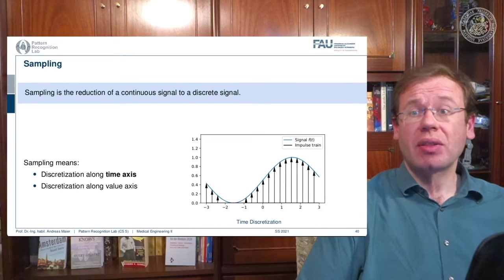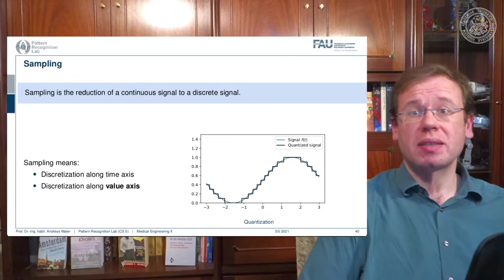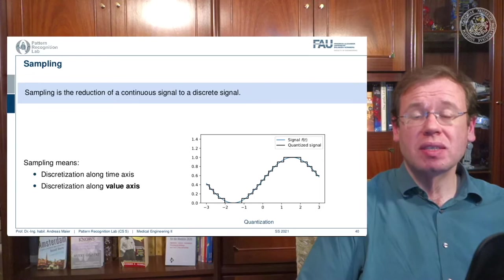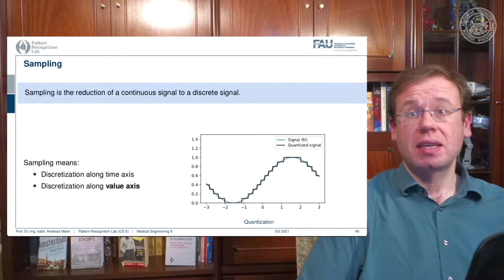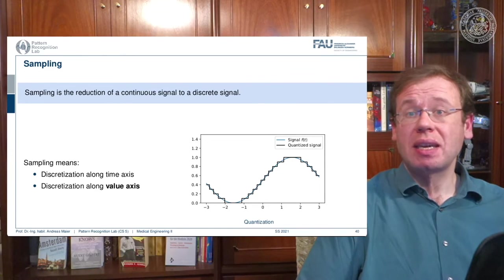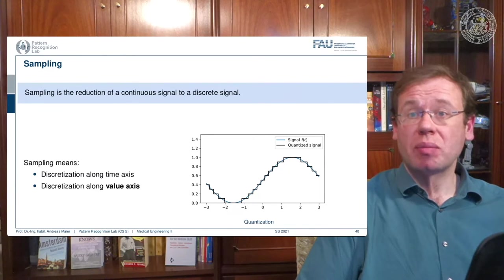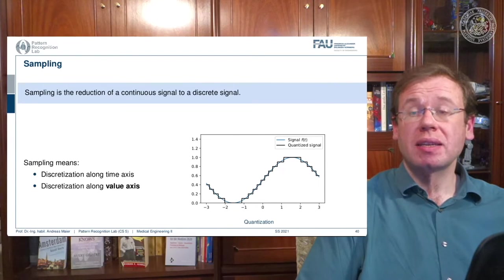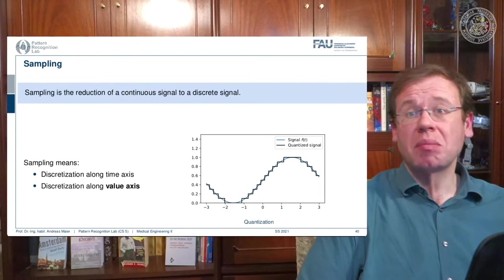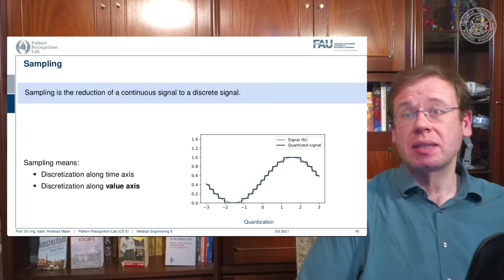And this is of course discrete because we cannot store infinitely many variables or observations in our computer. And the other thing is we need to quantize. And this means that we also have to assign discrete values on the value axis. So we cannot just save infinitely many values in our computer. So we also have to have a step size here in quantization. This is the main problem of sampling and digitization.